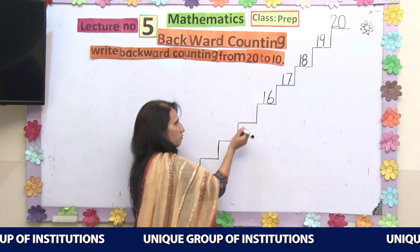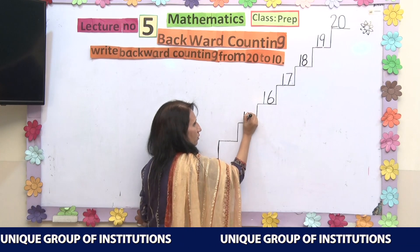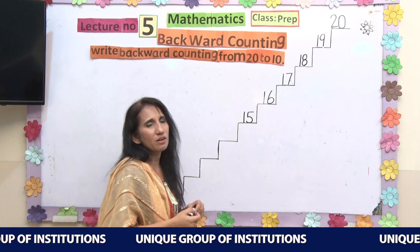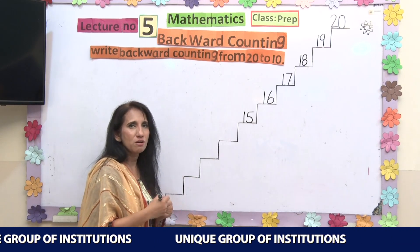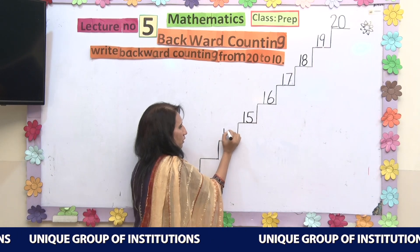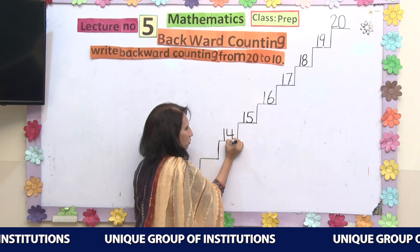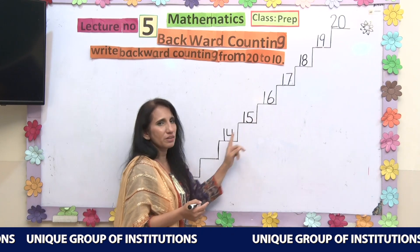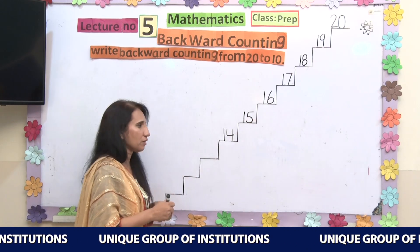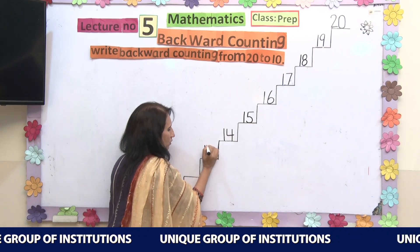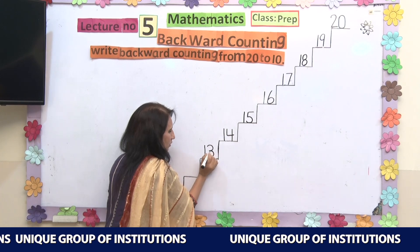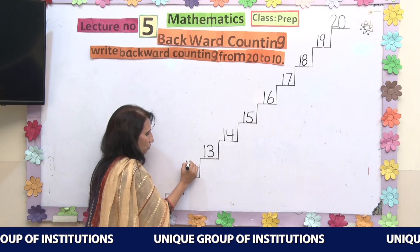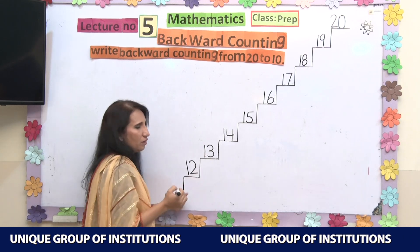What comes before 16? Before 16, we have 15 — written as 1 and 5. Before number 15, what do we have? Before number 15, we have number 14, written as 1 and 4. So: 20, 19, 18, 17, 16, 15, and 14. What comes before 14? Before 14, we have 13 — written as 1 and 3. And what comes before 13? We have 12, written as 1 and 2.